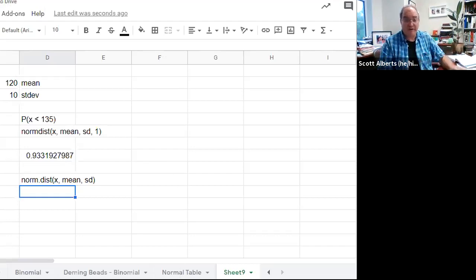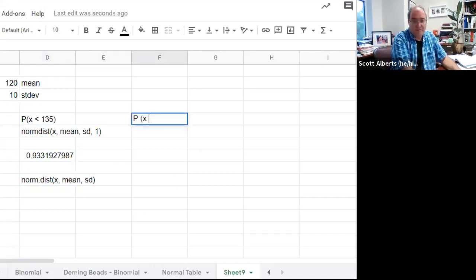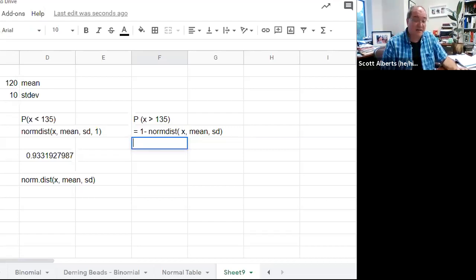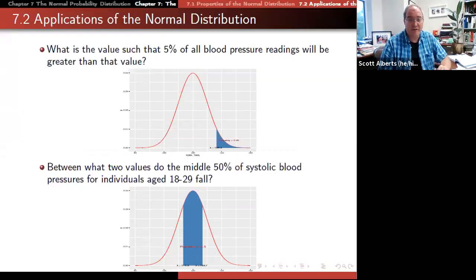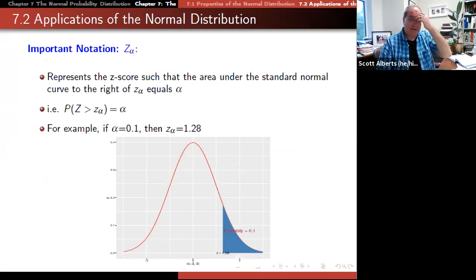If you want it to be greater than, you don't do any fancy calculation. You just do one minus norm.dist. Put in x mean standard deviation. Putting the numbers at the top with the dollar signs, you can kind of cheat and just enter those numbers once and then get it from there. You can go on through and calculate it from there.